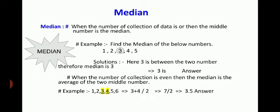When the number of collection is even, then the median is the average of the 2 middle numbers. For example: 1, 2, 3, 4, 5, 6. Here, 3, 4 is the middle of the 2 terms. Therefore, you have to find the average of these 2 terms. 3 plus 4 by 2 equals 7 by 2. That is 3.5.